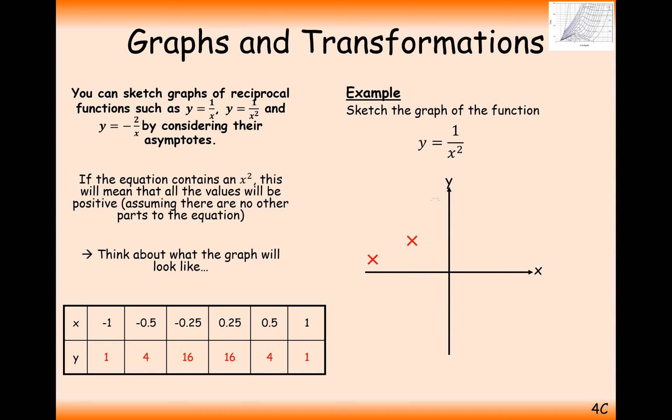So plotting these coordinates here, we're going to get a graph that looks something like this. So it's 1 over x squared. Now this graph here, if we compare it to the 1 over x graph, it's going to tend towards these asymptotes a lot quicker than the 1 over x graph did because we're squaring our terms each time.